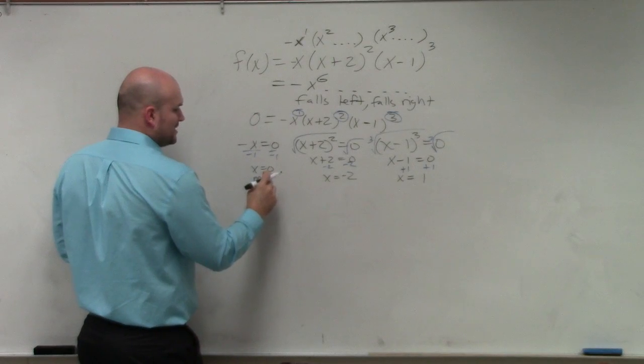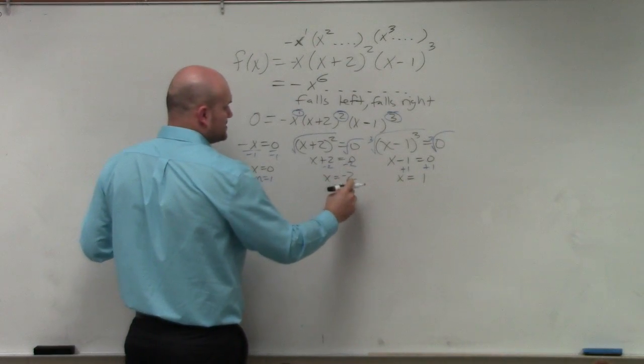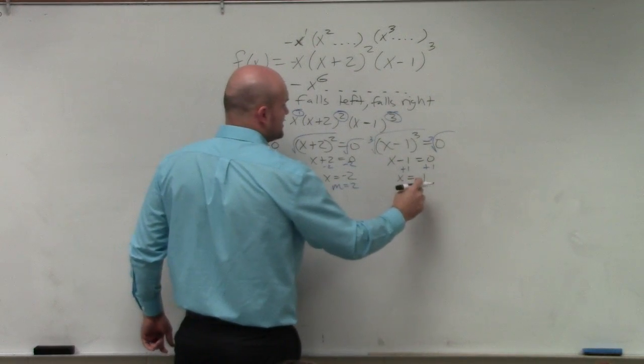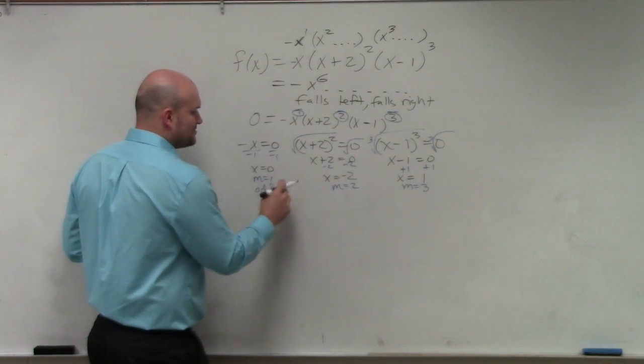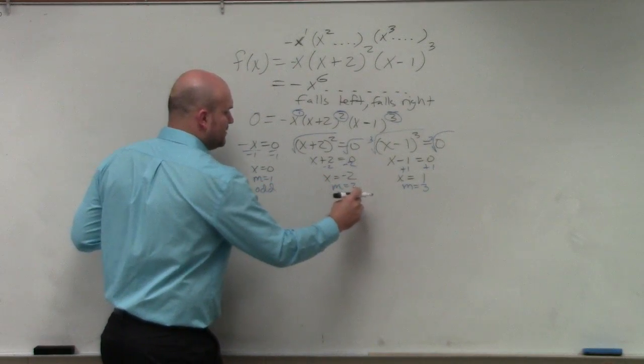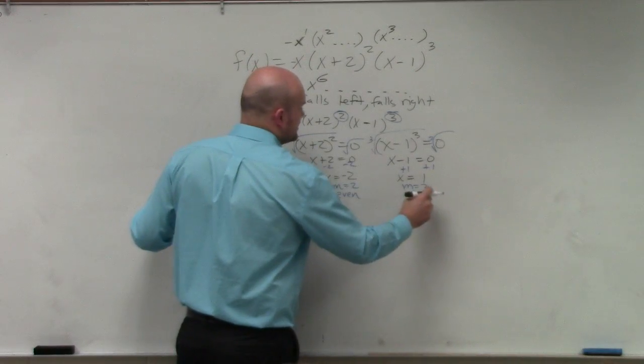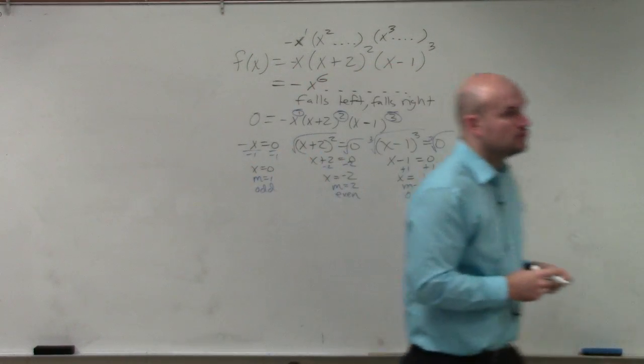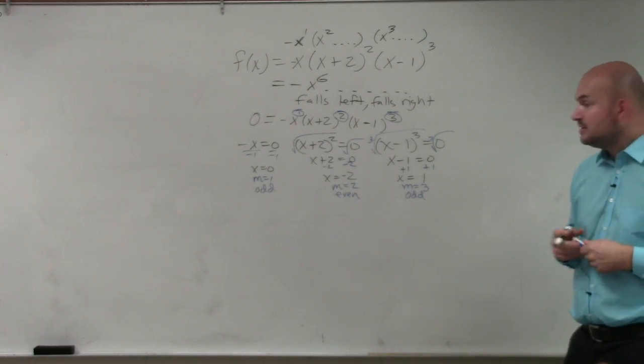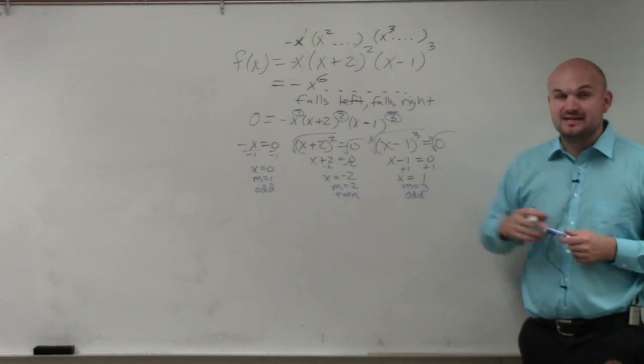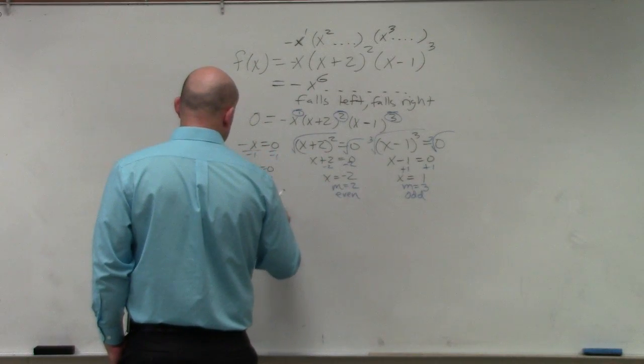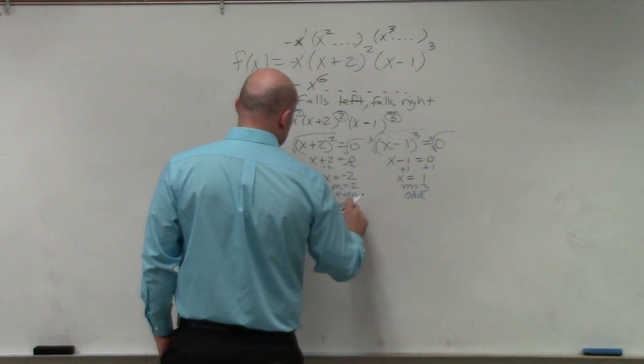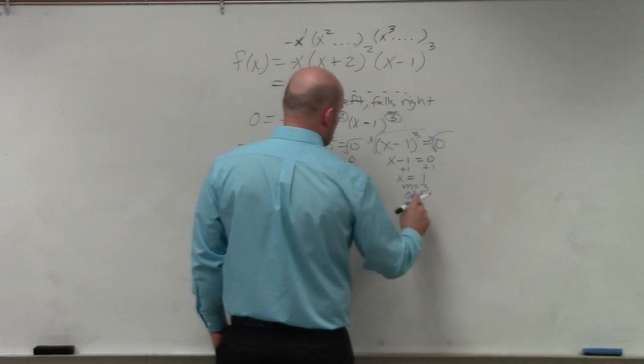So we'd say multiplicity equals 1, multiplicity equals 2, multiplicity equals 3. That's really important because in your notes last class period, when the multiplicity was odd, that told us that the graph crossed at that zero, and if the multiplicity was even, that said the graph bounces. So I'm going to write that in there, crossed, bounces, crosses.